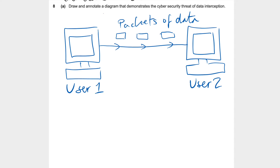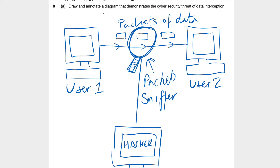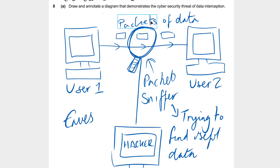How does that work? Well, these packets that are being sent — I'm going to try and draw like a magnifying glass, more like a tennis racket — and this has been sent from a third-party computer. This is the hacker. The hacker is using something called a packet sniffer to sniff out the packets of data. He's trying to find useful data. So user 1's packets of data being sent to user 2, the hacker has installed a packet sniffer to look at these packets and find useful data. Another name for this is eavesdropping.